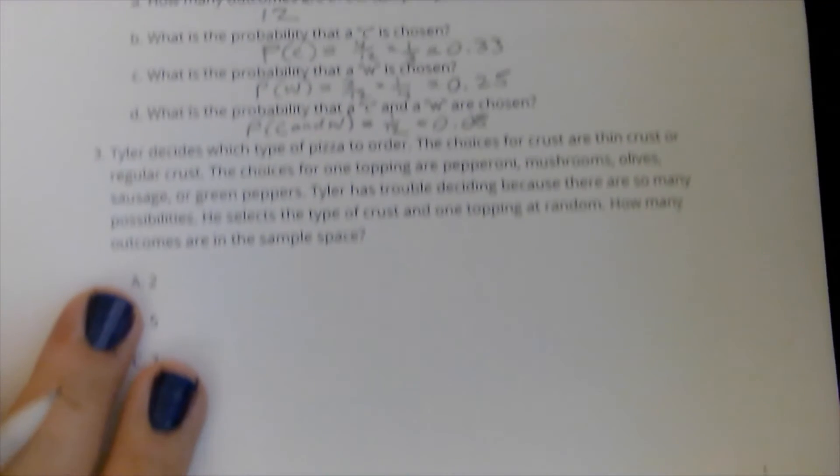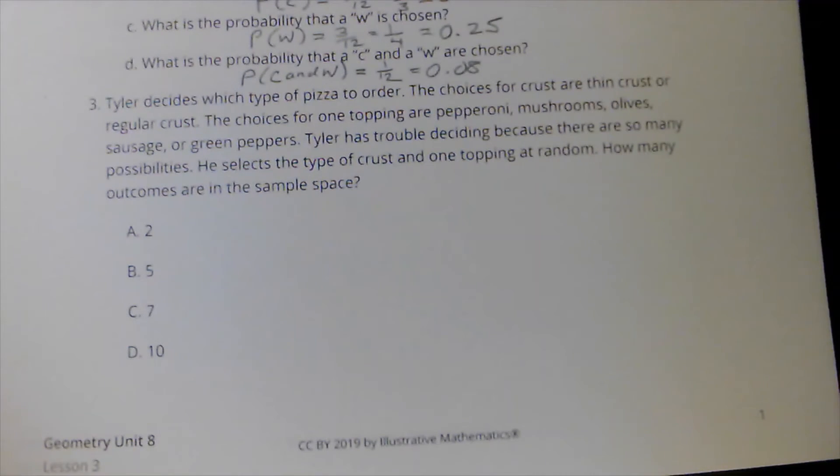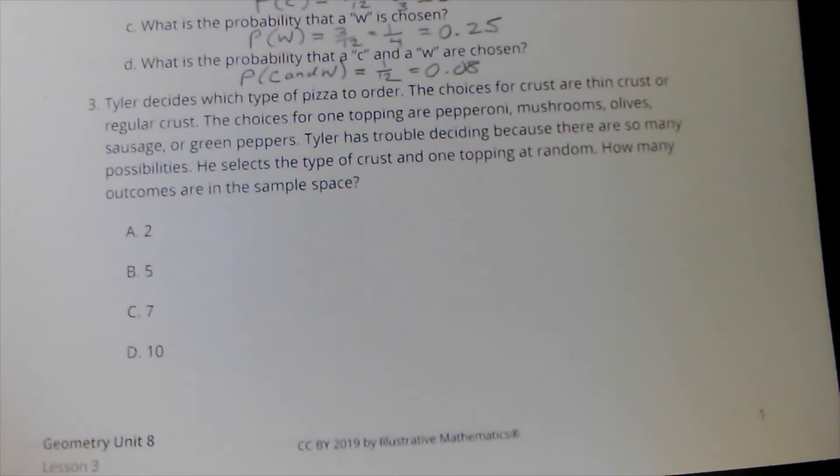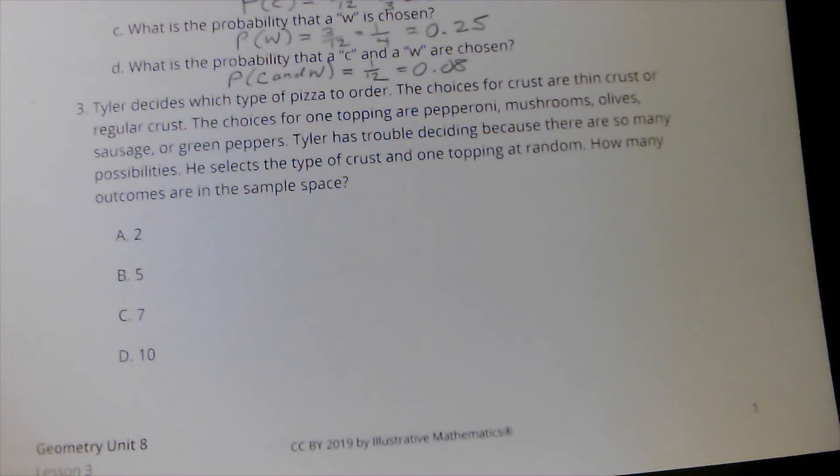Alright, on to the next one. Tyler decides which type of pizza to order. The choices for crust are thin crust or regular crust. The choices for one topping are pepperoni, mushrooms, olives, sausage, or green peppers. Tyler has trouble deciding because there are so many possibilities. He selects the type of crust and one topping at random. How many outcomes are in the sample space?